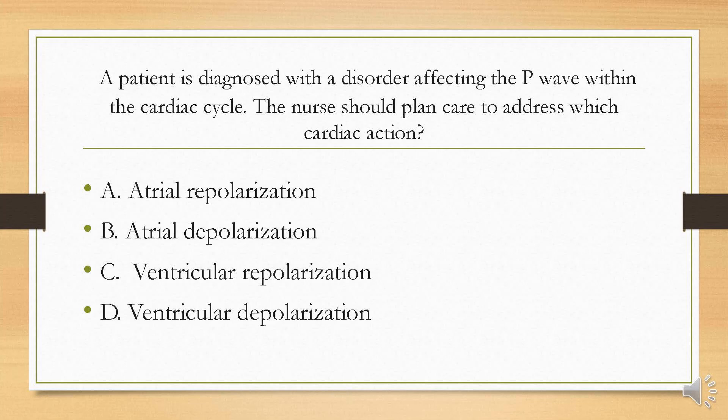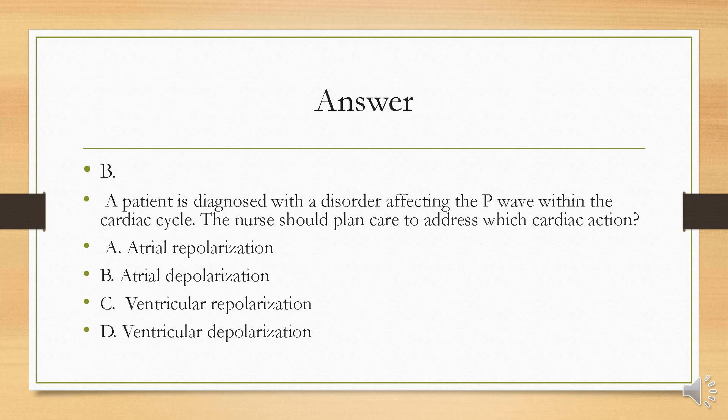A patient is diagnosed with a disorder affecting the P wave within the cardiac cycle. The nurse should plan care to address which cardiac action? Is it A, atrial repolarization; B, atrial depolarization; C, ventricular repolarization; or D, ventricular depolarization? Your answer is B. P waves represent atrial depolarization. The P wave does not represent atrial repolarization, ventricular repolarization, or ventricular depolarization.